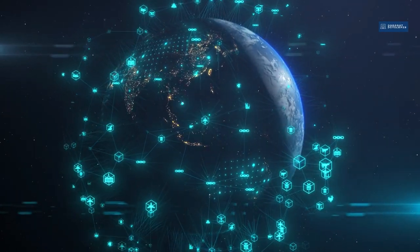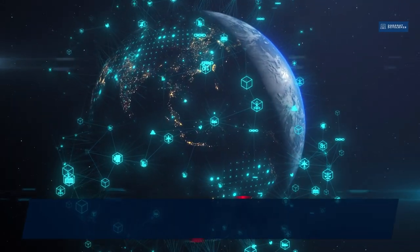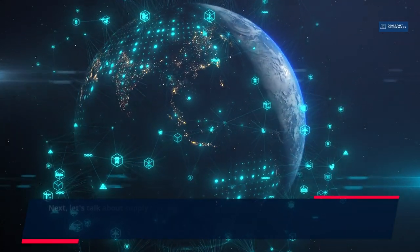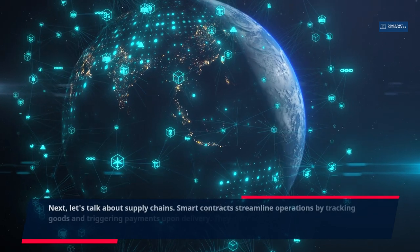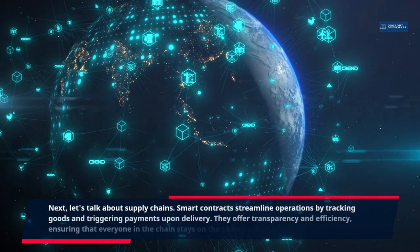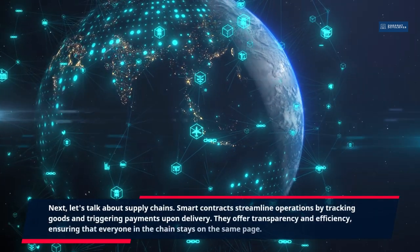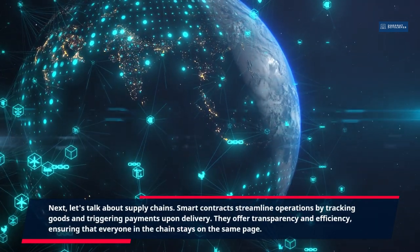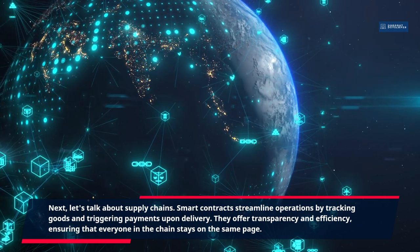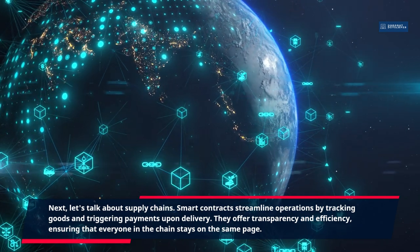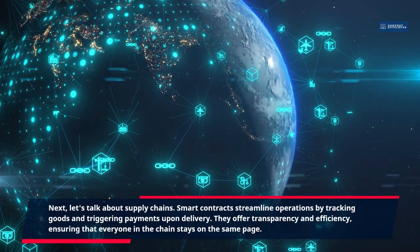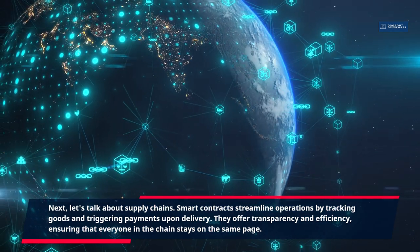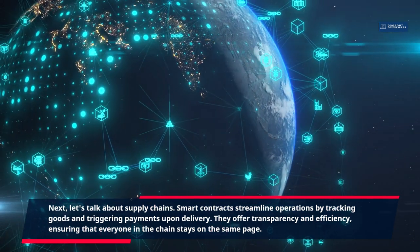Next, let's talk about supply chains. Smart contracts streamline operations by tracking goods and triggering payments upon delivery. They offer transparency and efficiency, ensuring that everyone in the chain stays on the same page.